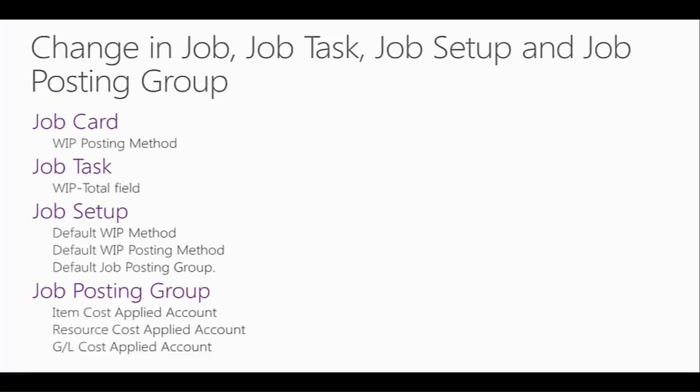Go back to the presentation. The next module, I'm going to talk about the small changes made around WIP and job functionality. We have four important changes. The first one is in Job Card — we have a new field called WIP Posting Method. This field has two options: Per Job and Per Job Ledger Entry. Per Job means we want to calculate WIP based on the job. Per Job Ledger Entry means we want to calculate accumulated value for cost and sales. In Job Task, we have changed an option of the WIP Total field. In the previous version we had the option Total and Close. In Dynamics NAV 2013, we have the option Exclude, meaning that for a specific job task line we want to exclude it from the WIP calculation.